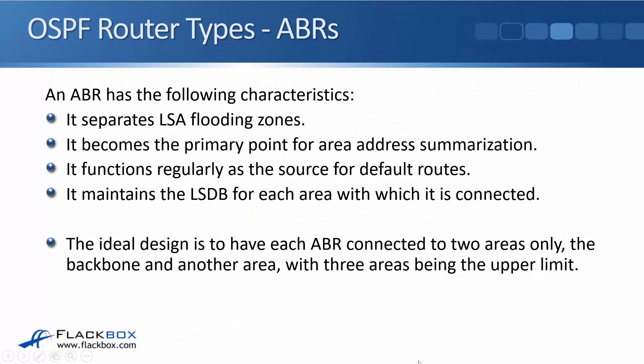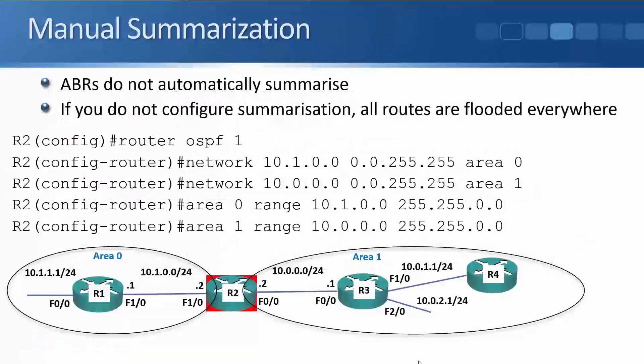The ideal design is to have each ABR connected to two areas only — the backbone and one other normal area. An important point is that ABRs do not automatically summarize; you need to do this manually. If you don't manually configure summarization, all routes will be flooded everywhere, and the network will basically behave like it was all in one big area.